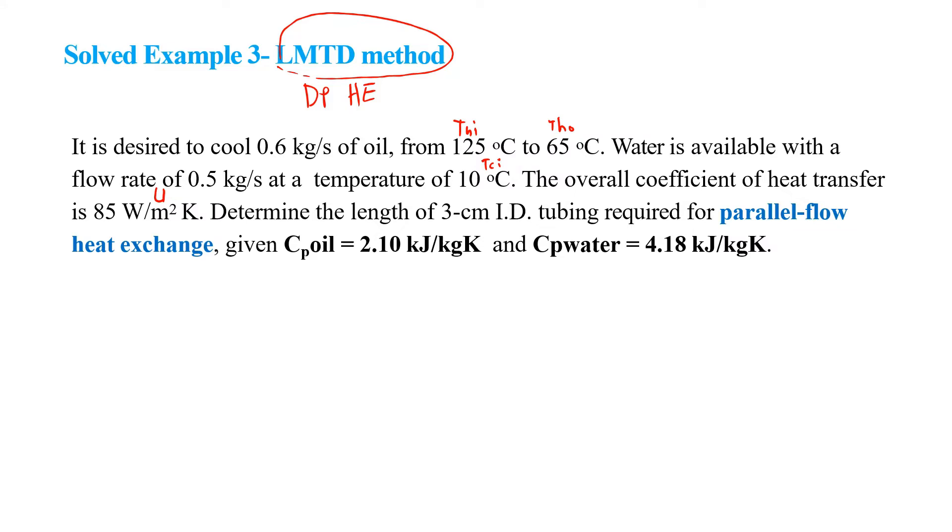The question is: determine the length of 3 cm inner diameter tubing required for a parallel flow heat exchanger. We are given Cp oil = 2.1 kJ/kg·K and Cp water = 4.18 kJ/kg·K.